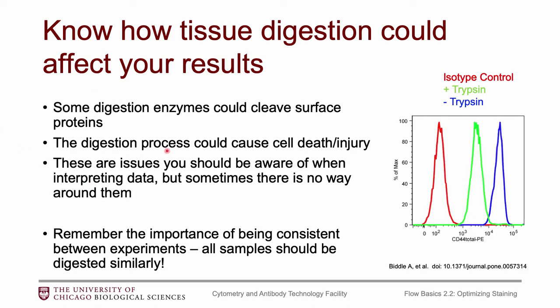Also, the digestion process tends to cause cell death or injury. Part of choosing a good digestion protocol involves choosing one that minimizes the amount of cell death. Sometimes these issues are just unavoidable — it is the nature of flow cytometry. We can't look at whole tissue; if you need to do that, you have to go with microscopy. But with microscopy, you can't look at many, many cells in a short amount of time — it's a much slower process.